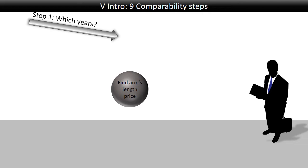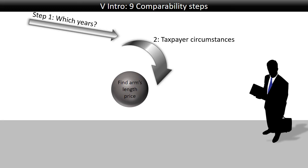So if we try to find the arm's length price for a transaction, what are steps two through to nine? The second step would be to determine the taxpayer's circumstances. What we typically mean here is you want to know what industry the taxpayer is operating in, how that industry functions, and where the taxpayer belongs in that industry — is it a market leader, is it following the trends, is it a price fighter?